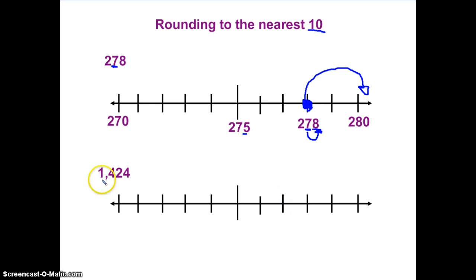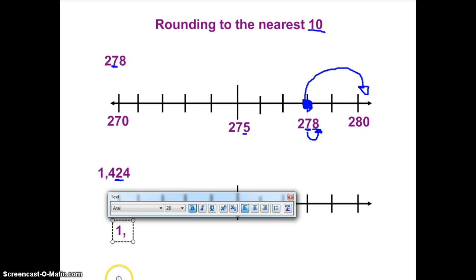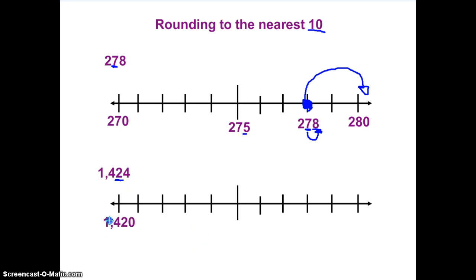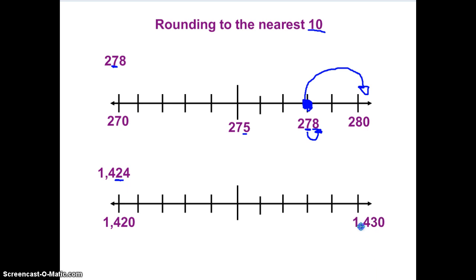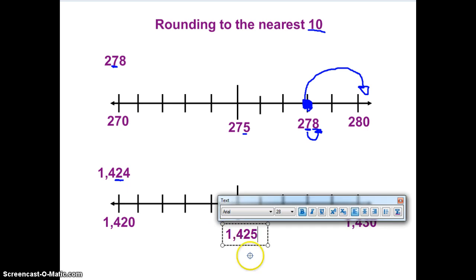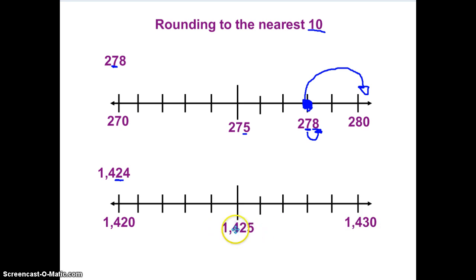Let's try the next one: 1,424. Am I rounding to the nearest hundred, the nearest thousand, or the nearest ten? I'm still rounding to the nearest ten. Let's start using my number line to help me. Nearest ten — this is my tens place. That means my first number on the number line is 1,420, and my next ten is 1,430, because I'm asking myself: is this number closer to 1,420 or 1,430? I always need to add my midpoint — 1,425 is right in the middle.